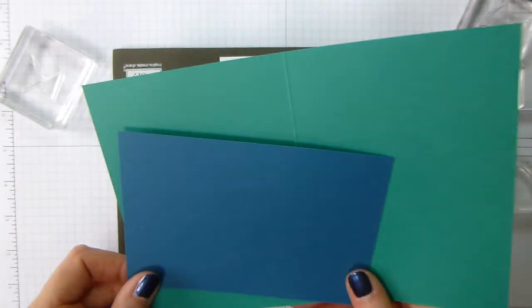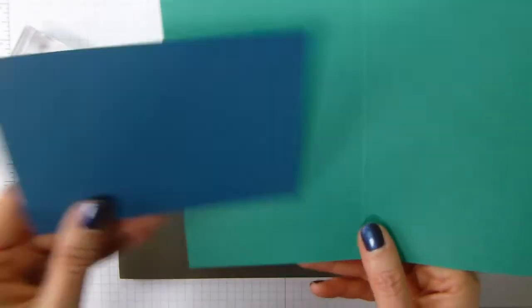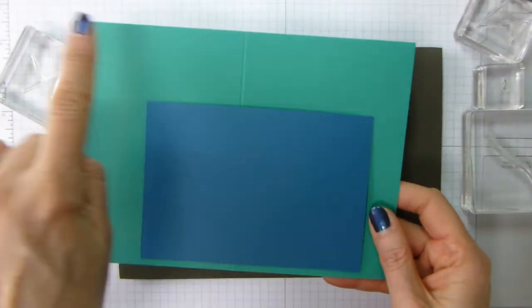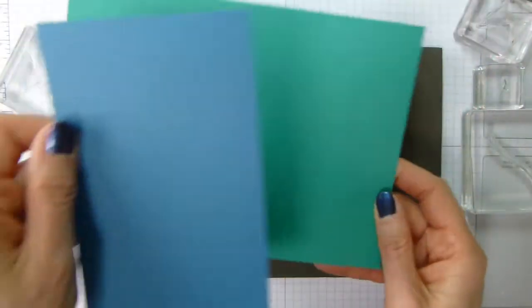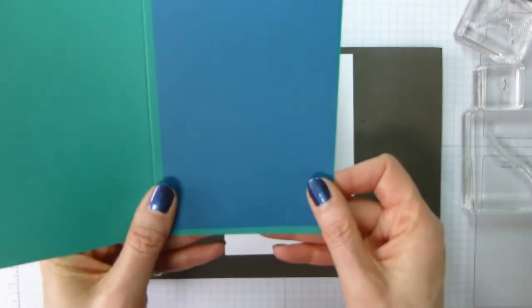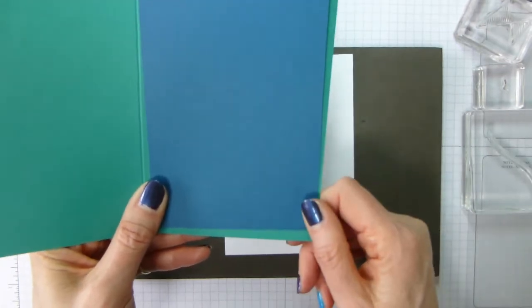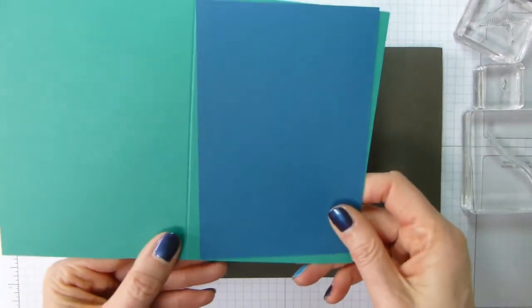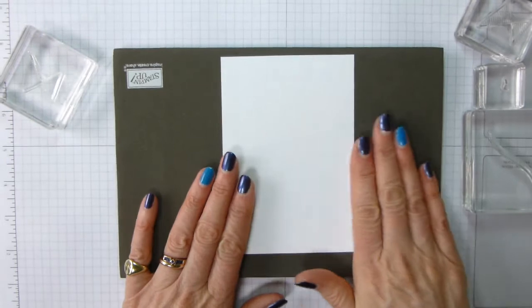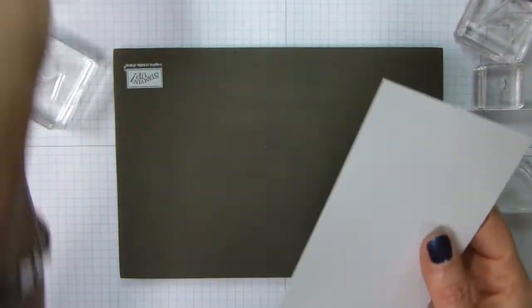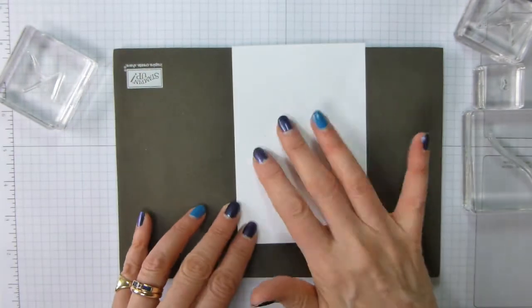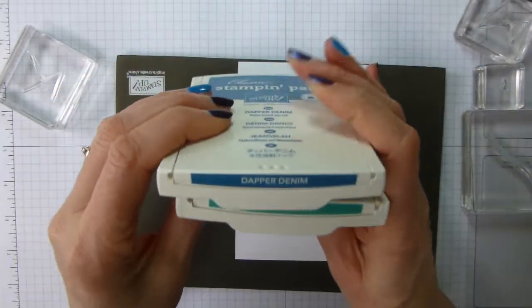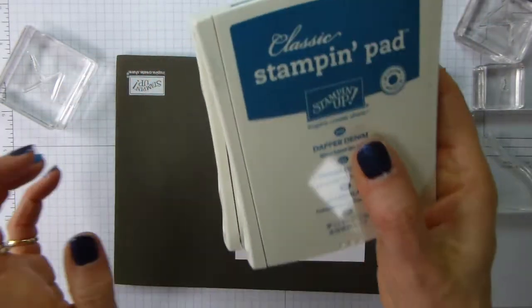I am using minimal supplies today. That one used lots. So I'm using Emerald Envy as my card base, and that's half a sheet of A4 cut in half, scored down the middle to make an A5 card. This is Dapper Denim, and this is cut at my usual bigger size, which is five and five-eighths by three and seven-eighths. All the dimensions will be on the blog post. And then this is my smaller Whisper White layer, five and a half by three and three-quarters. Two colours, Dapper Denim and Emerald Envy.